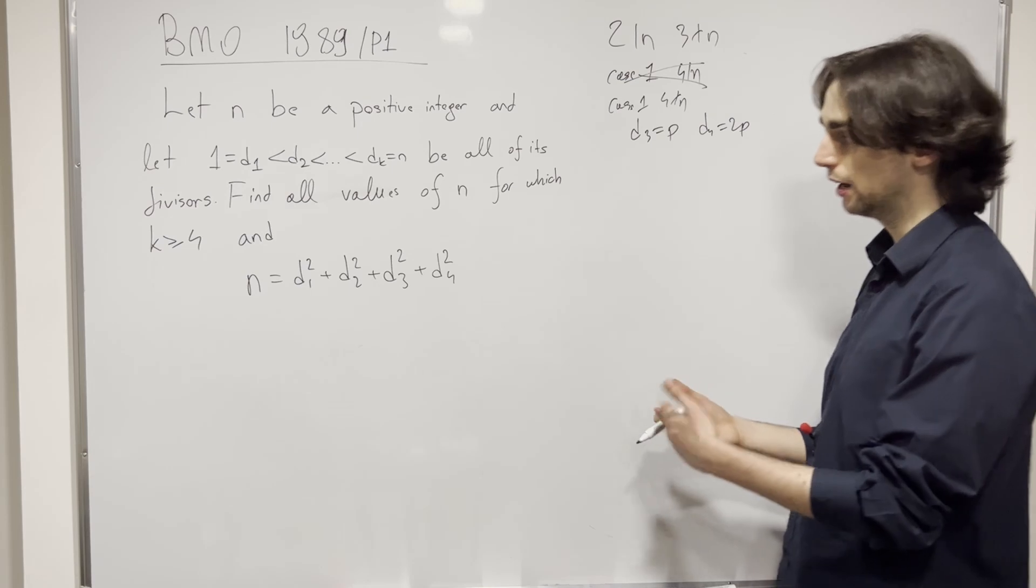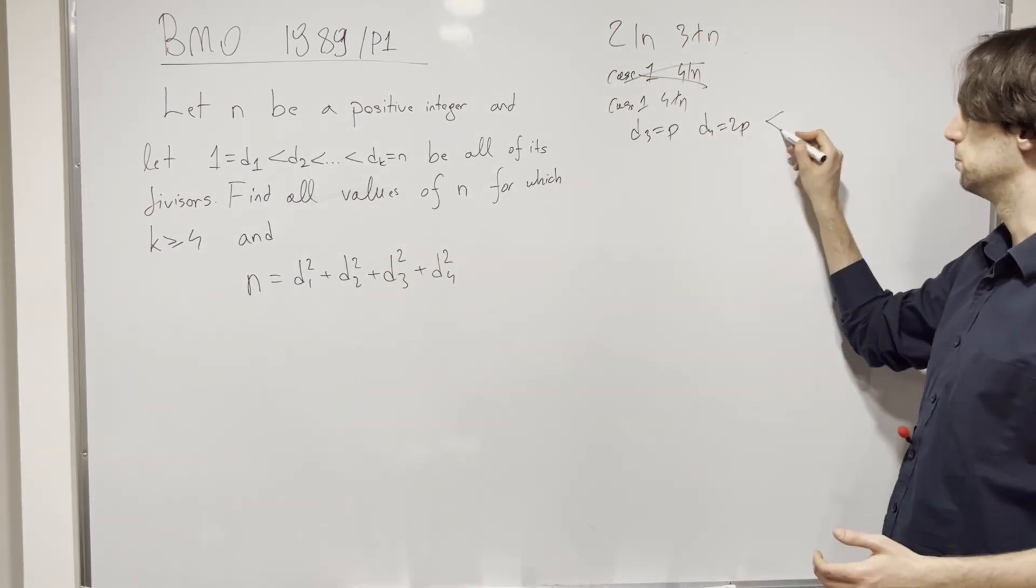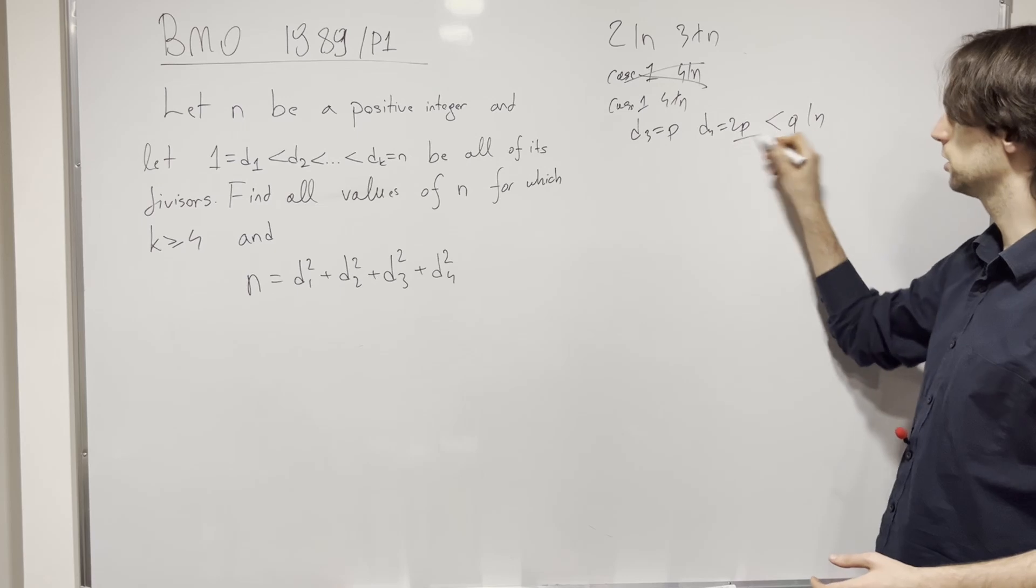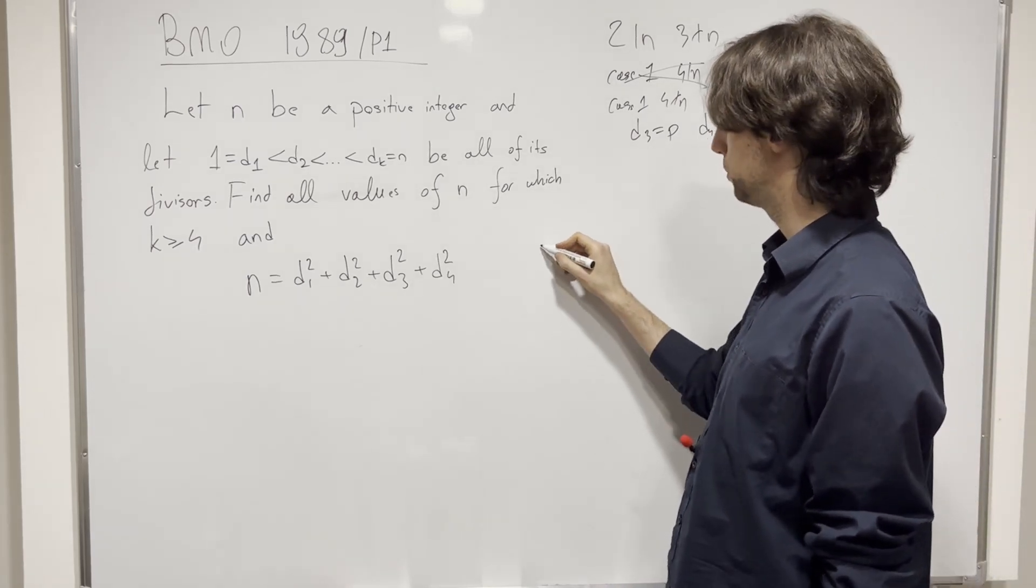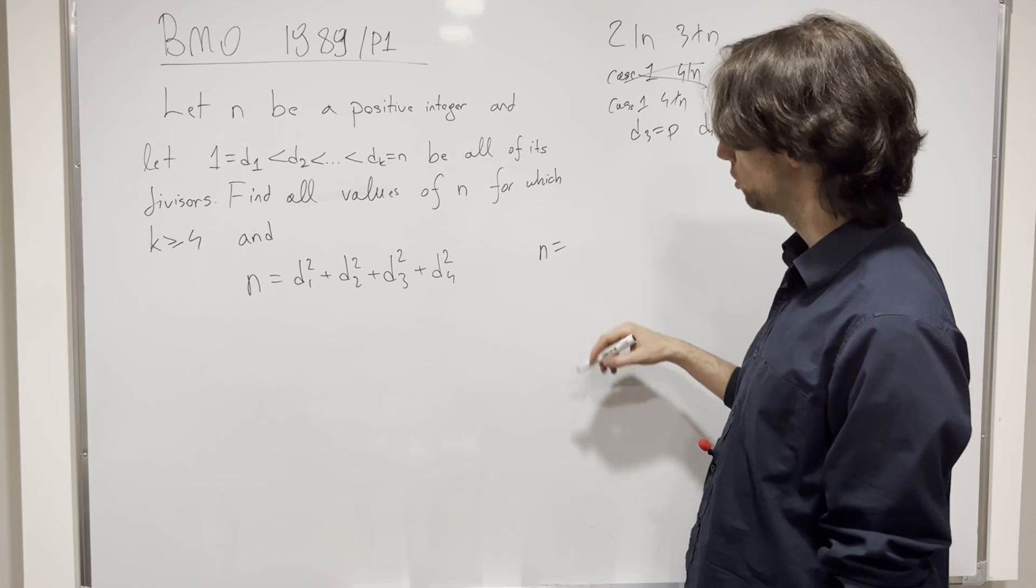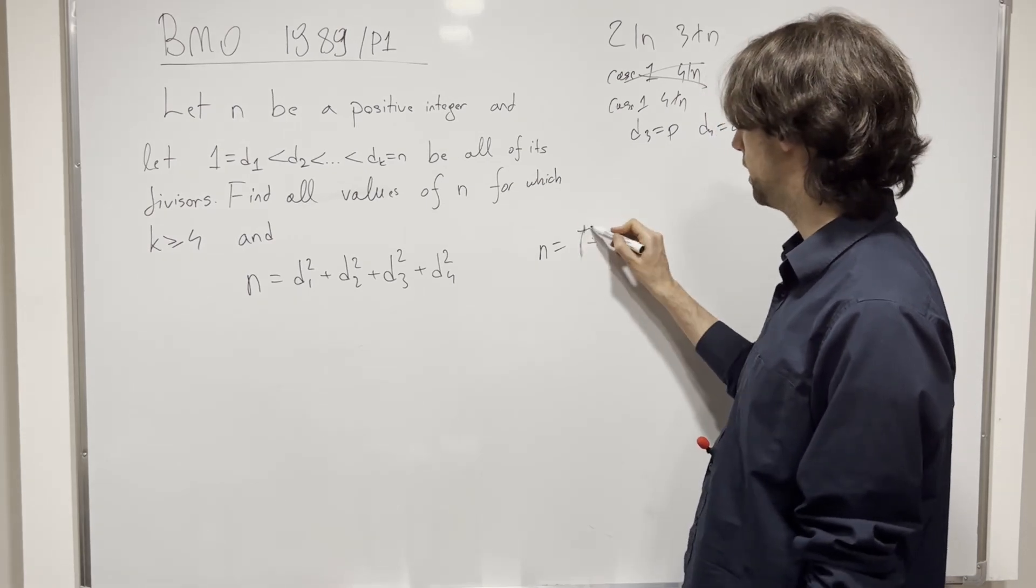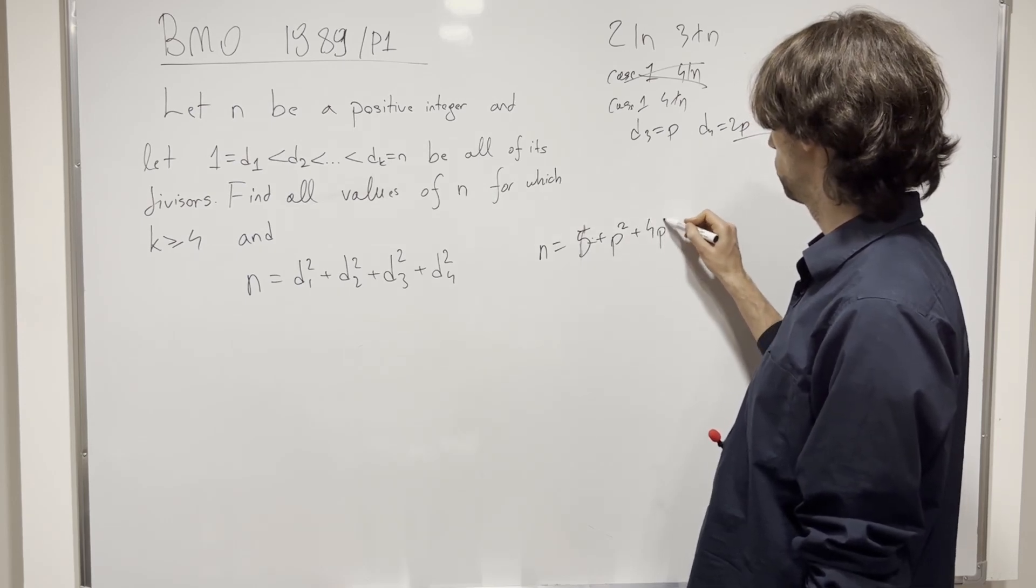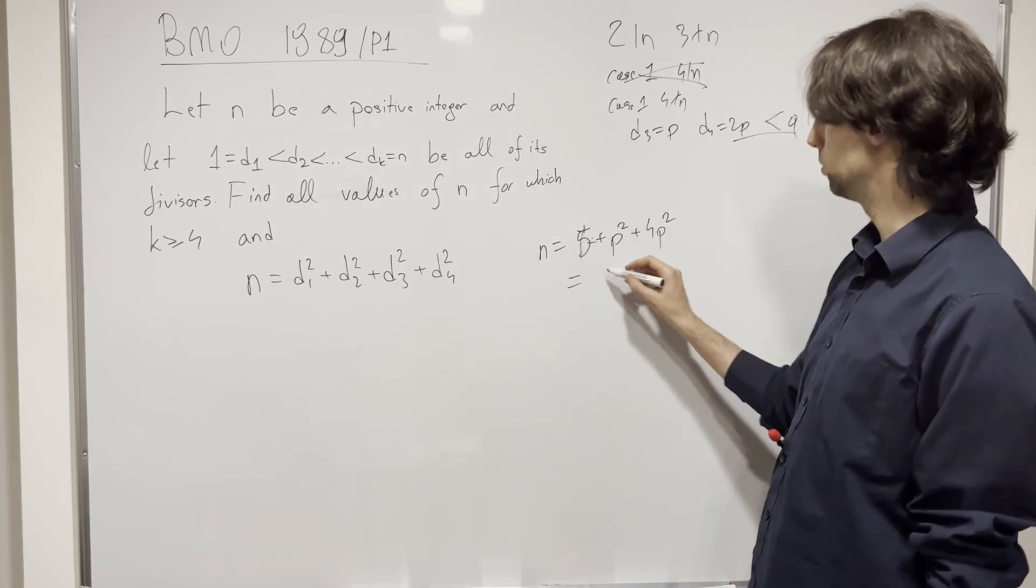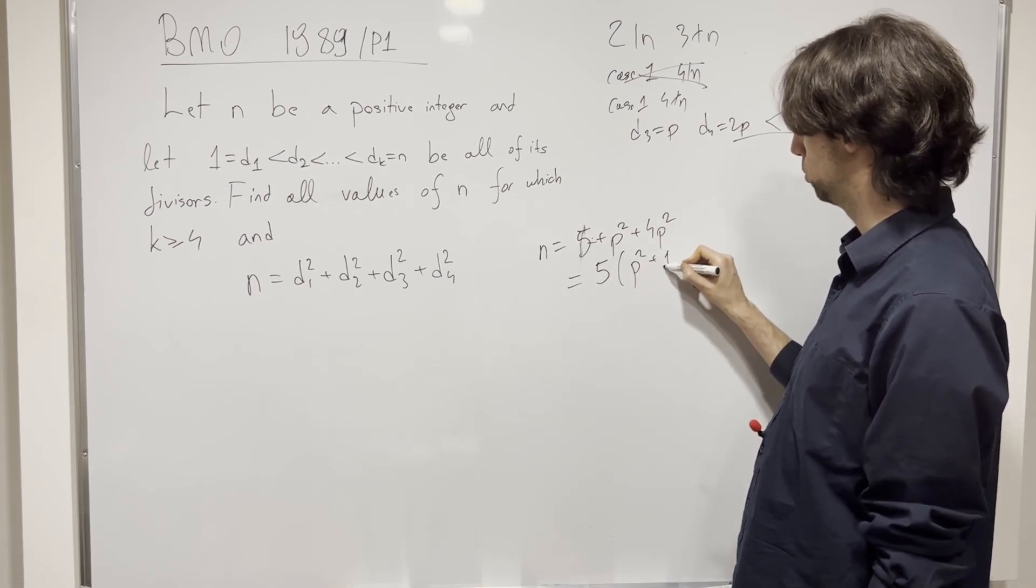Which means if there's another prime number that divides n, it's going to be greater than 2p. For any q that divides n, q is greater than 2p. Okay, with this in mind, what do we have? We have n is going to equal 1 plus 1 plus 2 is 5 plus p squared plus 4p squared, which is equal now to 5 times p squared plus 5.